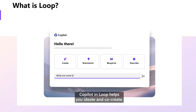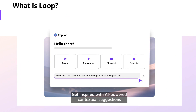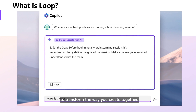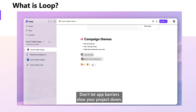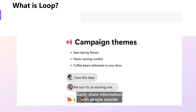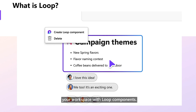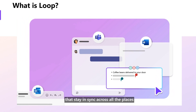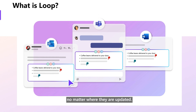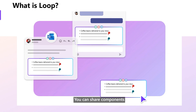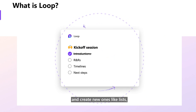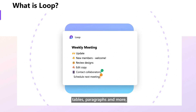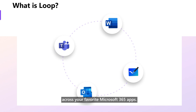Copilot in Loop helps you ideate and co-create. Get inspired with AI-powered contextual suggestions to transform the way you create together. Don't let app barriers slow your project down. Easily share information with people outside your workspace with Loop components. Components are portable pieces of content that stay in sync across all the places they have been shared, no matter where they are updated. You can share components and create new ones like lists, tables, paragraphs, and more across your favorite Microsoft 365 apps.